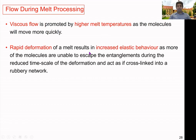Rapid deformation of a melt results in increased elastic behavior. When deformation is rapid, most of the molecules are unable to escape their entanglements during the reduced time scale of the deformation. Therefore they act as cross-linked in a rubbery network, and rapid deformation tends to promote the elastic behavior of the material.